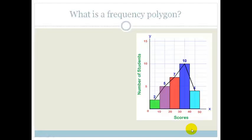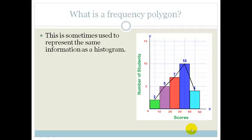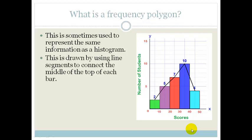The frequency polygon looks exactly like a histogram and is sometimes used to represent the same information. It is drawn by using line segments from each bar. There's a line drawn from here to here and here to here, which gives you an idea of the scale of the change.